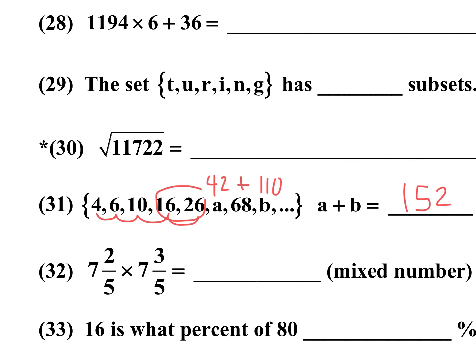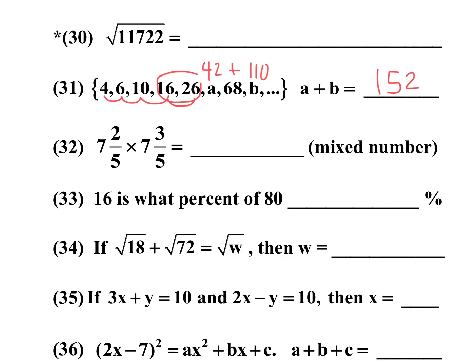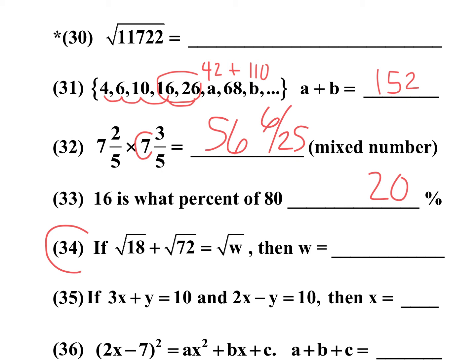Number 32: two-fifths times three-fifths equals 6 over 25. Number 33: 7 times 8 is 56. Number 34 setup: 16 is what percent of 80 — that's one-fifth, and one-fifth as a percent is 20%.